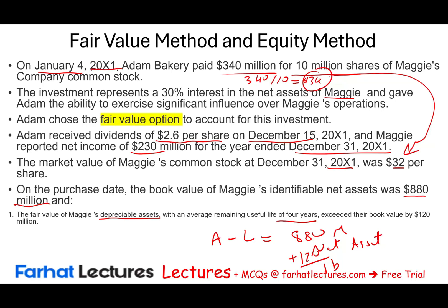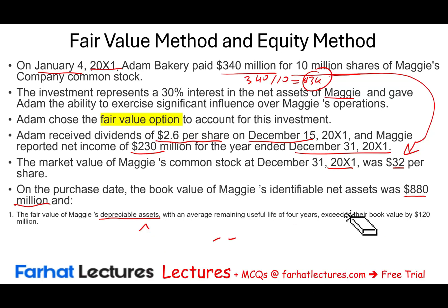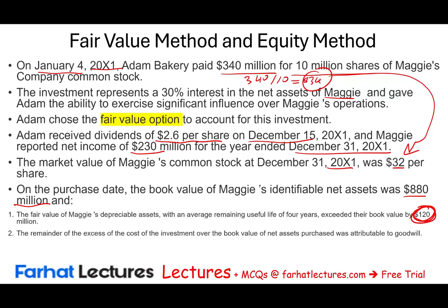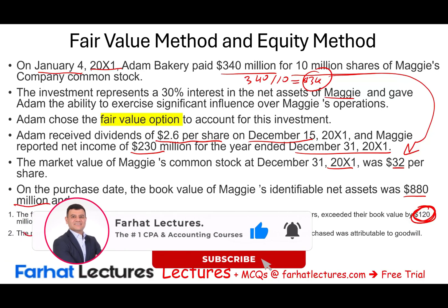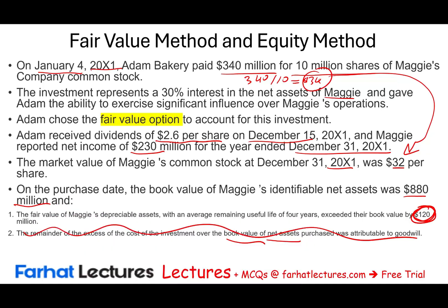The fair value of Maggi's depreciable assets, with an average remaining life of four years, exceeds their book value by $120 million, bringing total asset fair value up to about $1 billion. This means at the time of purchase there was an additional $120 million in fair value in excess of book value for depreciable assets — this will increase depreciation going forward. Any remaining excess of cost over book value of net assets is attributed to goodwill, though we don't need to focus on that in this example.